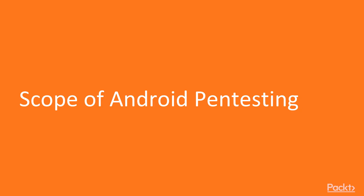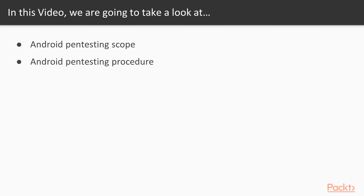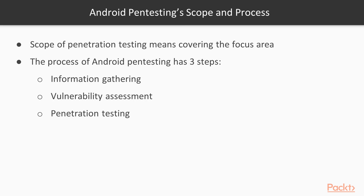In this video we are going to take a look at Android pen testing scope — what is the scope of Android pen testing and what is the procedure to perform penetration testing on an Android machine. The scope of penetration testing means covering the focus areas. The process of Android pen testing has three steps: information gathering, vulnerability assessment, and penetration testing.